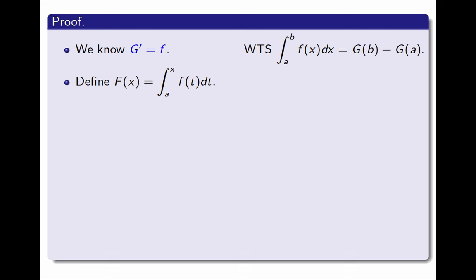And in terms of this function, what I am trying to prove can be rewritten this way. I want to show that F(b) is equal to G(b) minus G(a). So I'm trying to show that there is this relation between F and G.